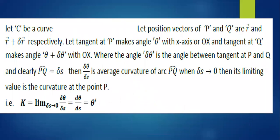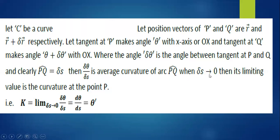Let C be a curve with position vectors of P and Q being R and R + δR respectively. The tangent at P makes angle θ with the X-axis, and the tangent at Q makes angle θ + δθ with OX. Then δθ/δS is the average curvature, and as δS → 0, the limiting value is the curvature at point P: κ = lim(δS→0) δθ/δS = dθ/ds = θ'.